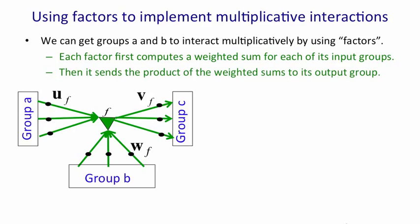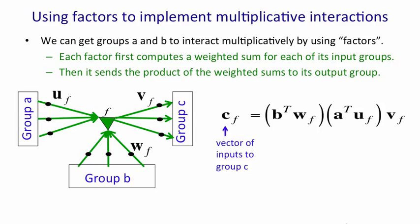So the input to group C is just the product of the two numbers that come into the two vertices of the triangle times the outgoing weight vector V. We can write that as an equation. The input that factor F provides to group C, so its vector input to group C, is a scalar input to F from group B that's got by multiplying the state of group B by the weights W_F. We then take the product of those two scalars and multiply the weight vector V_F by that, and that's the input that the factor gives to group C. Then, of course, we're going to have a whole bunch of those factors.